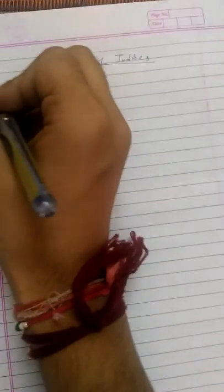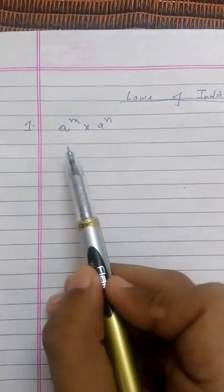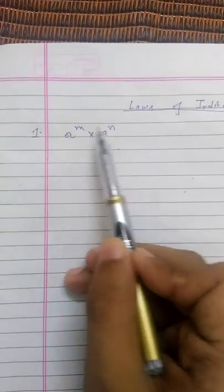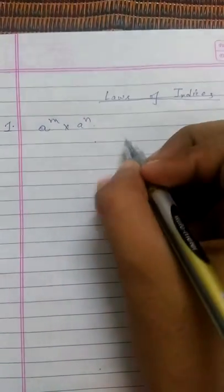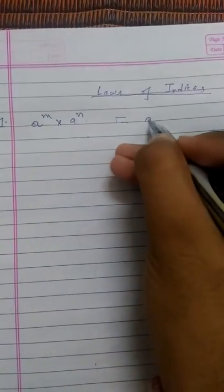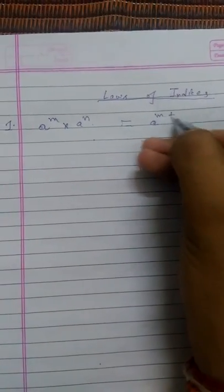Welcome to my YouTube channel. Today I will discuss the laws of indices. The first law of indices is: a raised to the power m, multiplied by a raised to the power n. If both the bases are same, then the powers are added, so the result will be a to the power m plus n.